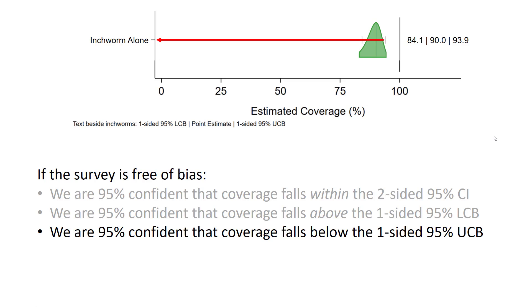And we are 95% confident that coverage falls somewhere below the one-sided upper bound. The two-sided interval is the main output when we estimate coverage, and the one-sided bounds are the outputs that we use for classifying coverage — and we include them in the inchworm plot with the ticks shown here.